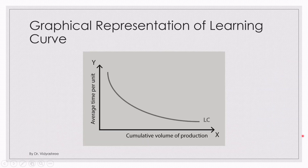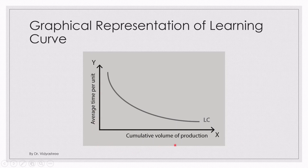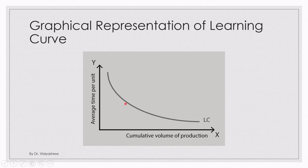Let's look at the graphical representation of the learning curve. The average time per unit is on the y-axis and cumulative volume of production is on the x-axis. In the initial stage, the average time to produce a product is high. As the employee learns, the time taken gradually reduces while production increases. As production increases and the employee learns more, time keeps decreasing — that is the learning curve.